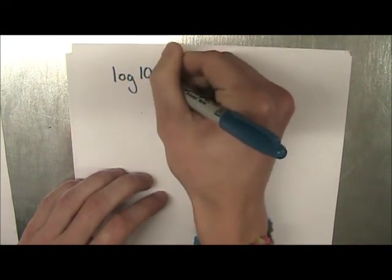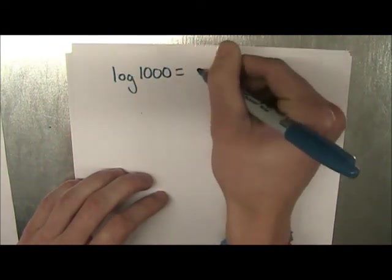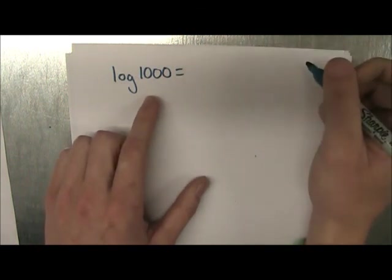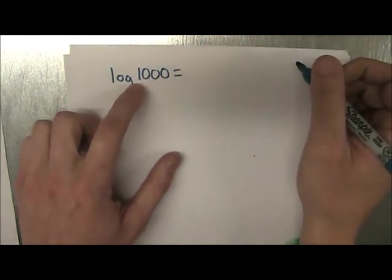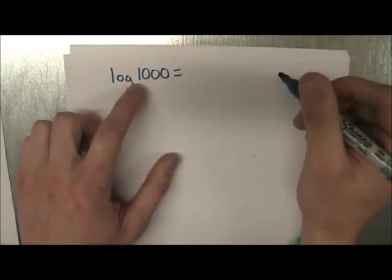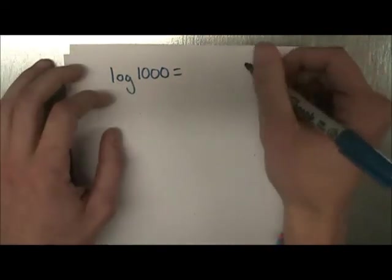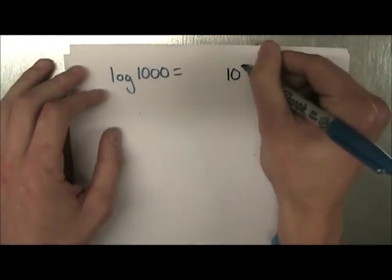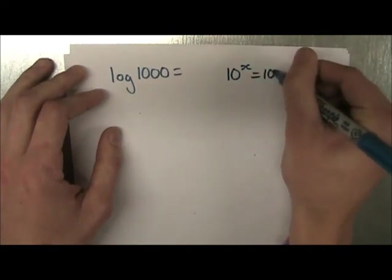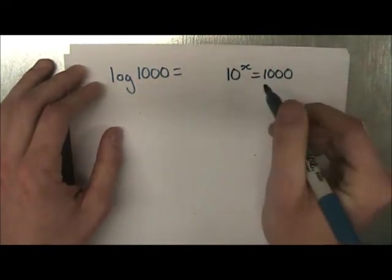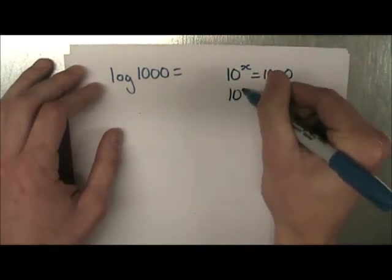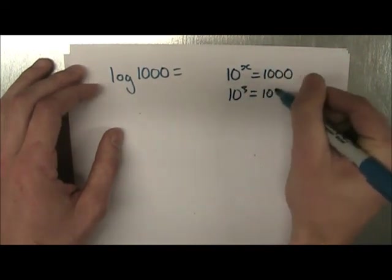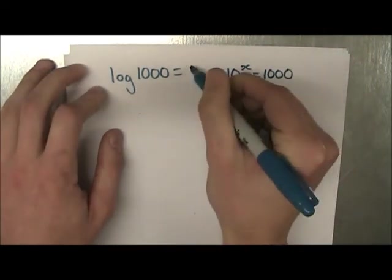Log of 1,000. Okay, what does this equal? Well, remember, when there is no base, and I didn't put a base here, we take it as a common logarithm. And the common logarithm has a base of 10. So it's 10 to the x is equal to 1,000. And we know that 10 to the power of 3 is equal to 1,000. Therefore, log of 1,000 is equal to 3.